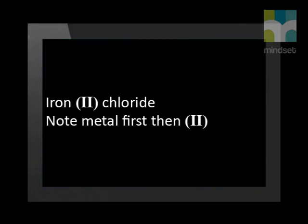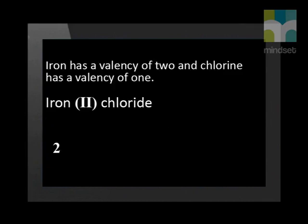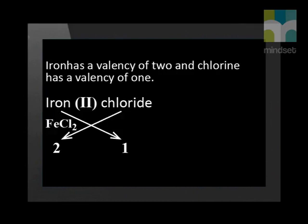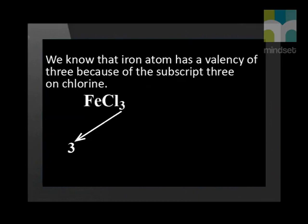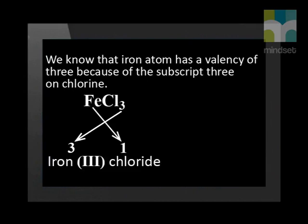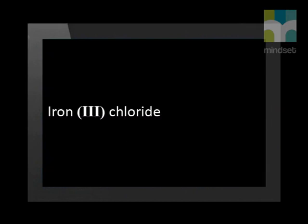The iron chloride is written as iron(II) chloride. Iron, in this case, has a valency of 2 and chlorine has a valency of 1. To write the formula, we swap this ratio — we need 2 chlorine atoms and 1 iron atom. The formula is thus FeCl₂. If the formula given is FeCl₃, we know that the iron atom has a valency of 3 because of the subscript 3 on the chlorine atom. We need 3 chlorine atoms to bond with an iron(III) atom. The stock notation for this compound is written as iron(III) chloride.